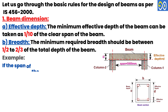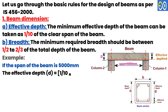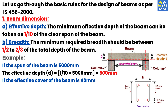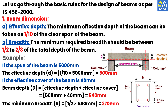Example: If the span of the beam is 5000 mm, the effective depth equals 1/10 × 5000 = 500 mm. If the effective cover of the beam is 40 mm, then beam depth equals effective depth plus effective cover: 500 + 40 = 540 mm. The minimum breadth equals 1/2 × 540 = 270 mm.